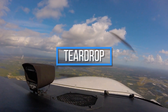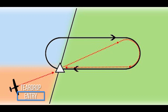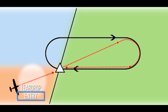Teardrop Entry: When approaching the holding fix from anywhere in the orange shaded region, the teardrop entry procedure should be conducted. The pilot flies to the fix and upon reaching it, turns outbound to a heading that is 30 degrees offset from the inbound leg's heading on the holding side of the hold.